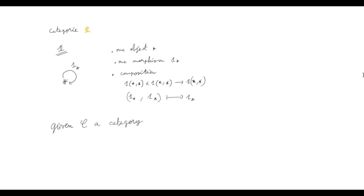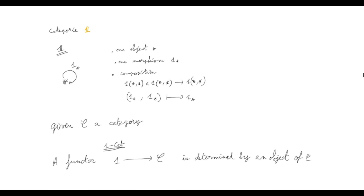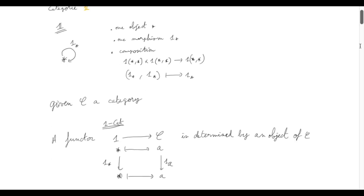If we start from a general category C, we can see that a functor from 1 to C is actually determined by just an object of C. If we write out what it means to be a functor, we have to map every object of the domain category 1 to an object of C, and every morphism of the domain to a morphism in C. By the axioms of a functor, the identity morphism must be mapped to the identity morphism. So a functor from 1 to C is just an object in disguise.